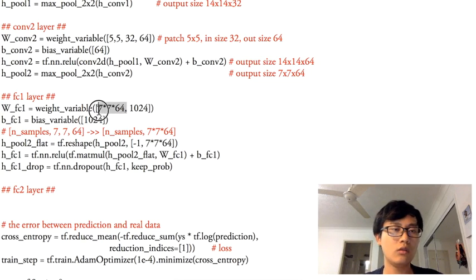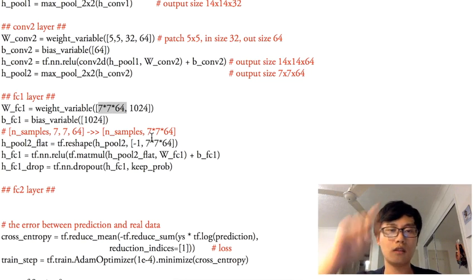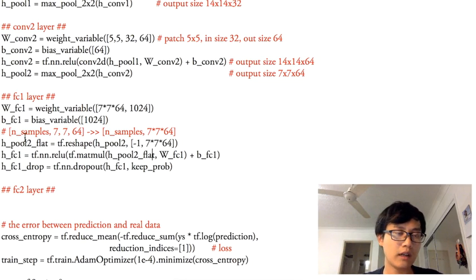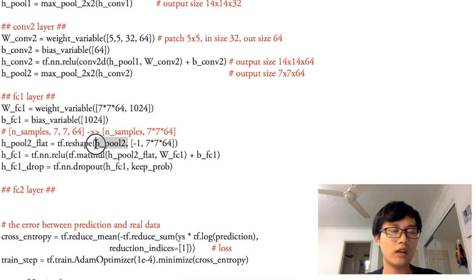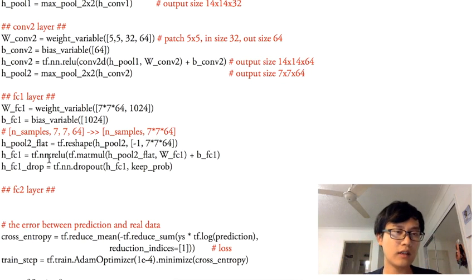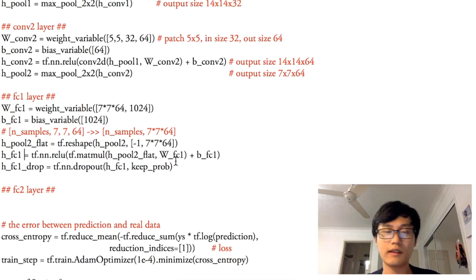We reshape h_pool2 to h_pool2_flat — keeping N_samples as the first dimension and flattening all other dimensions (7×7×64) into one, then use the normal methods to calculate the hidden layer.